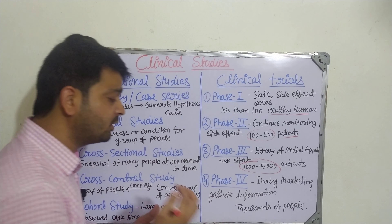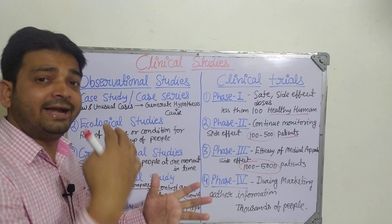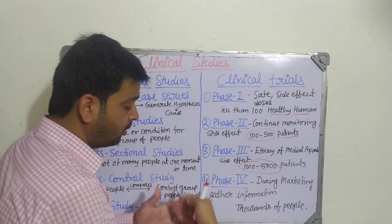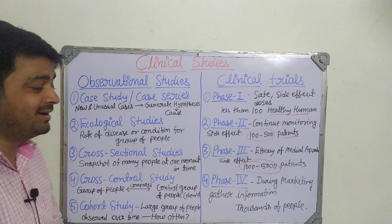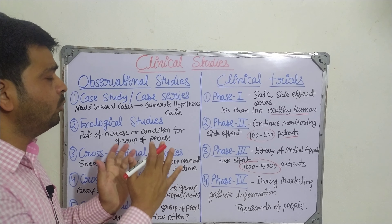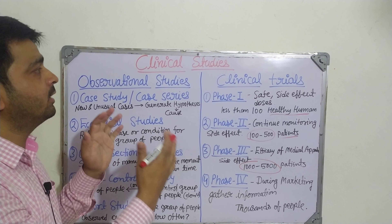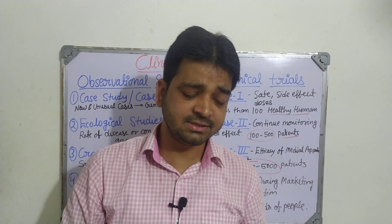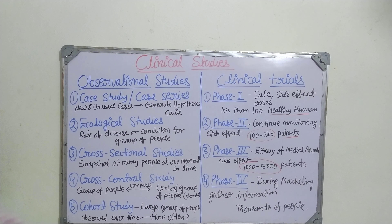In Phase 2, we continue monitoring side effects, but now we use patients instead of healthy humans, and the number increases to 100 to 500. Side effect monitoring continues. In Phase 3, efficacy and side effect monitoring continue. We want to know whether the drug is giving activity to people or not. The number increases to 1000 to 5000 patients, giving us more data to predict whether to proceed to manufacturing, production, and marketing.